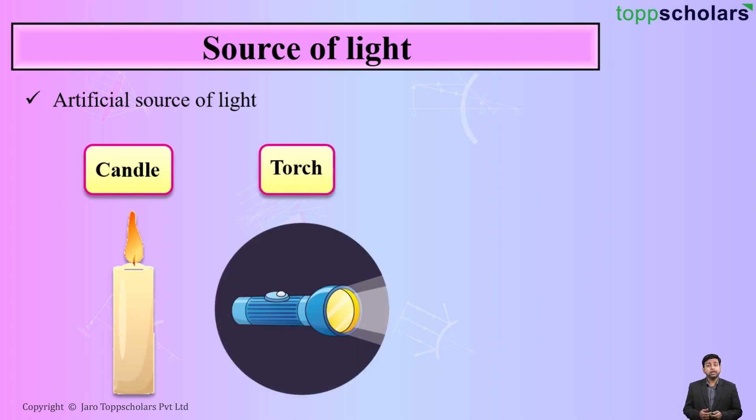Another example, a torch. One more that is a tube light. So these are nothing but the artificial sources of light.